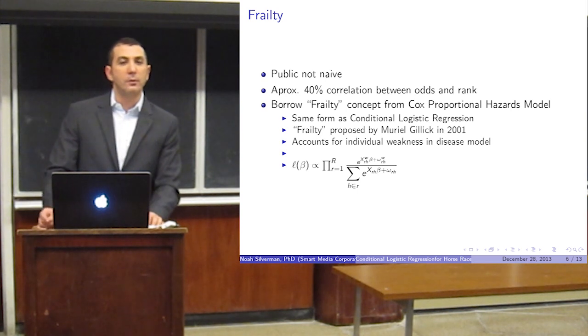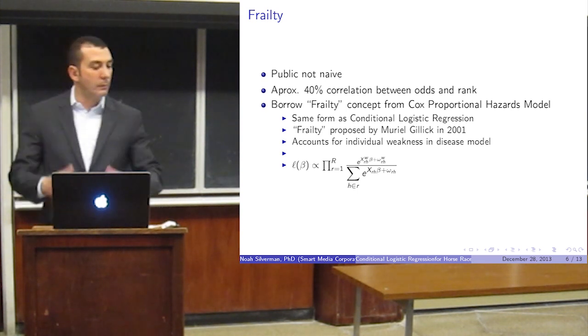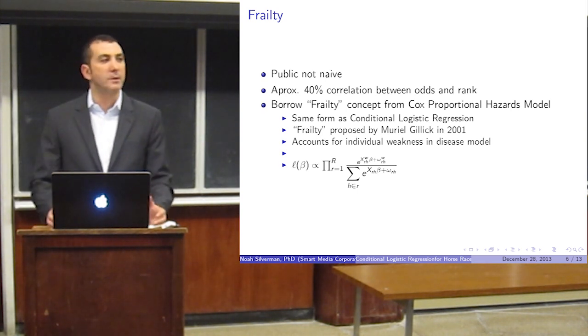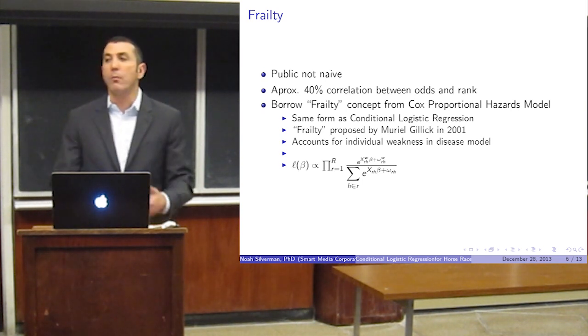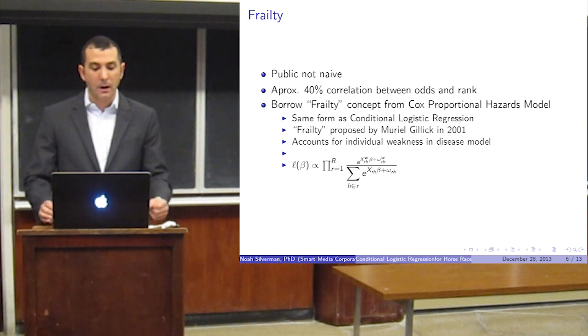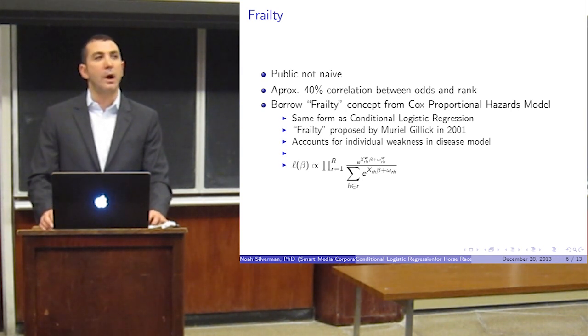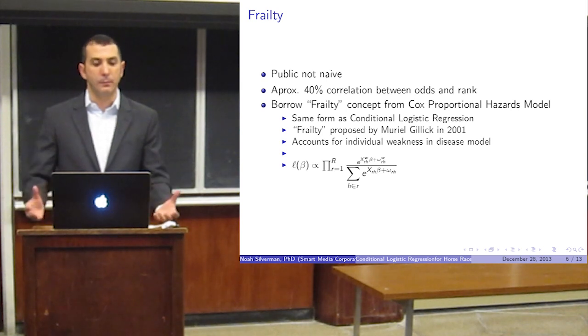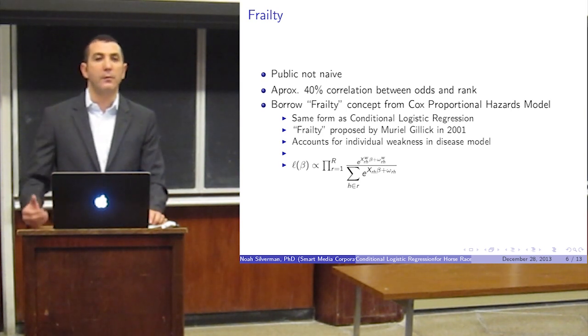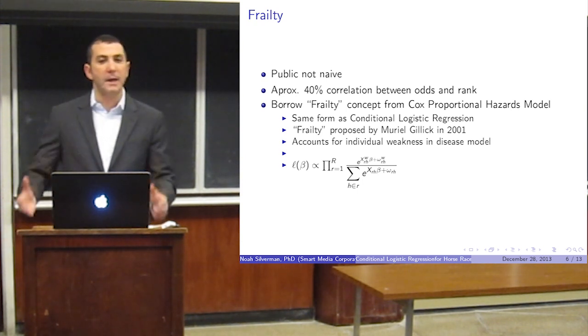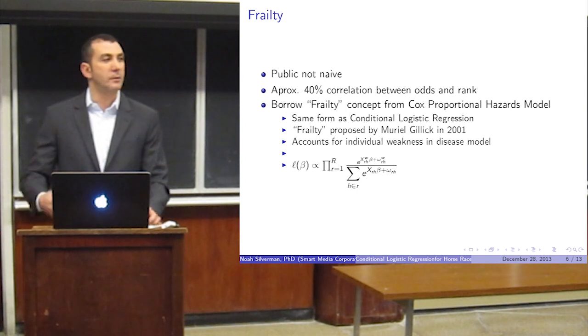A mathematician or statistician named Gillick in 2001 proposed a concept of a frailty. And the idea is fairly simple. Not everybody, when you're studying people and disease in medicine, not everybody is as strong. Some people are more frail or more likely to contract a disease. So you add a weighting factor to them so you're not treating everybody the same, which makes a lot of sense. Because if you think about it, traditionally with the model, we're trying to fit coefficients, but the coefficients apply equally across all cases. Here we're allowing a case weight to exist as well.